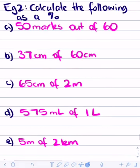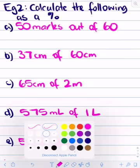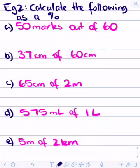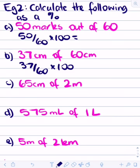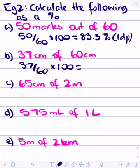Now: calculate the following as a percentage — quantity of a quantity. Remember the formula: A over B times by 100. First: 50 out of 60 times by 100 equals 83.3% (to 1 decimal place). Next: 37 divided by 60 times by 100 equals 61.7% (to 1 decimal place).